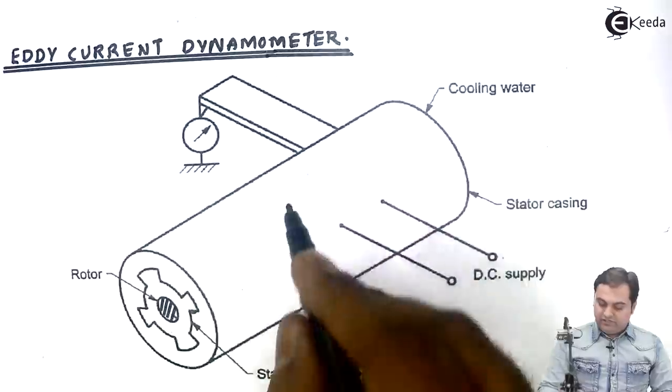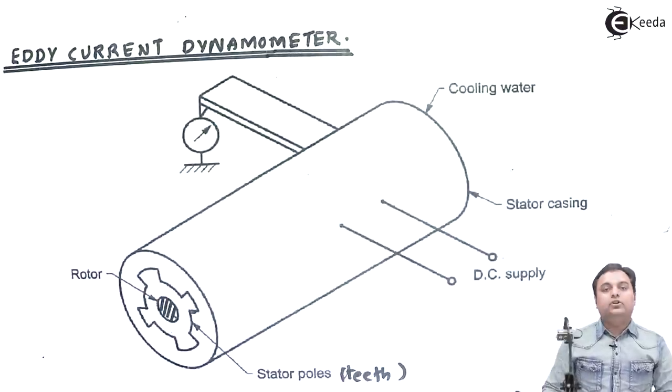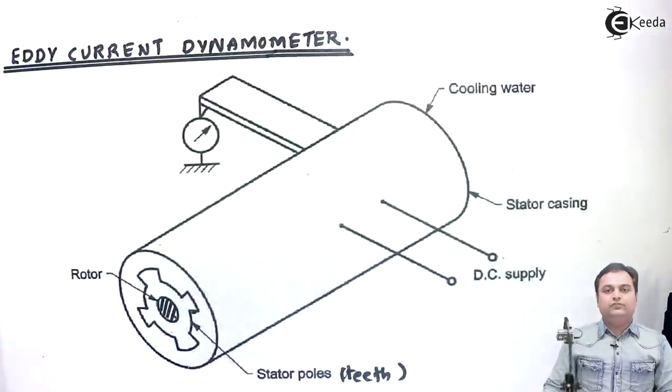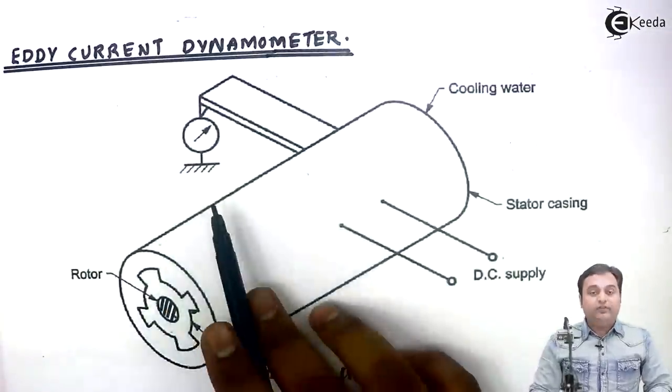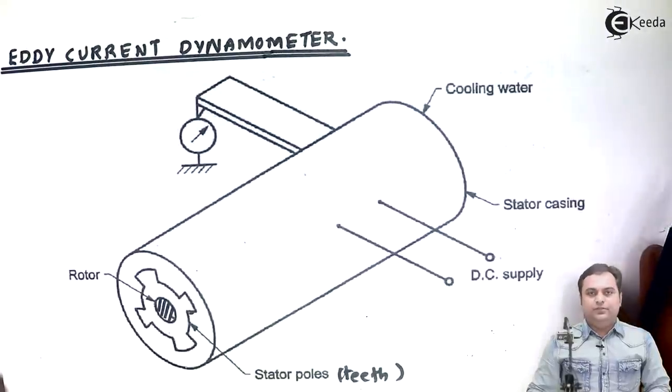When that eddy current is generated, at that instant the torque is measured with the help of the torque arm and given to the pointer. So we can directly get the value of torque, and once we know the torque, we can calculate the power using the eddy current dynamometer.